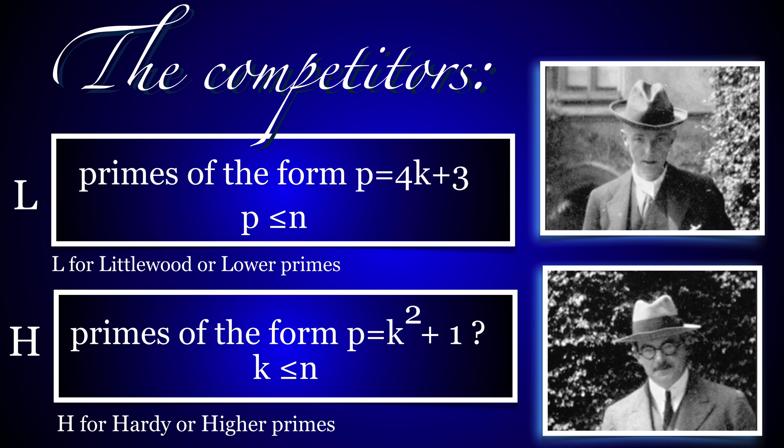The L primes are primes of the form 4k+3. The H primes are primes for which p-1 is a square. We call Ln the set of 4k+3 primes up to n, and Hn the set of all k less than or equal to n for which k²+1 is prime. The relevance of these two classes will be clarified later.